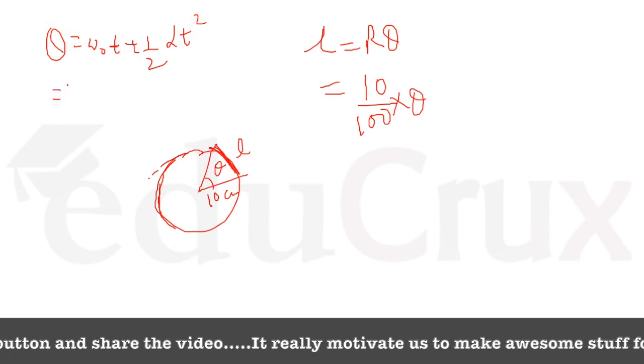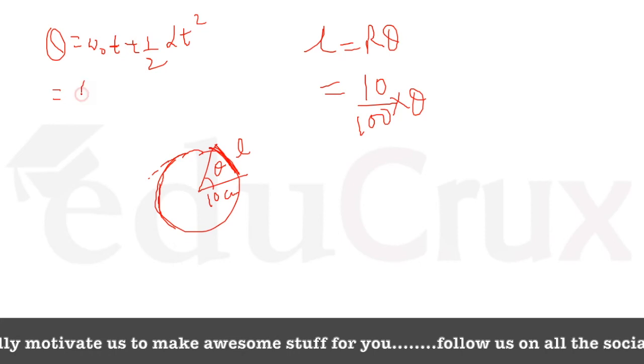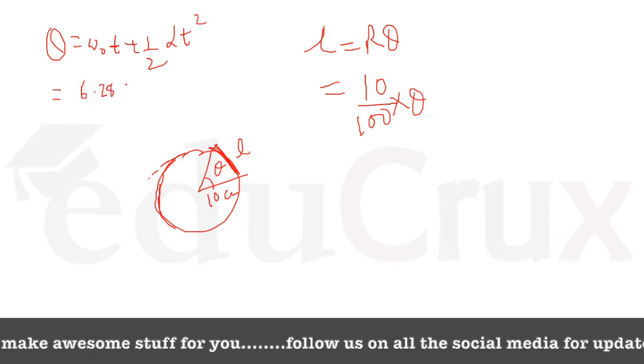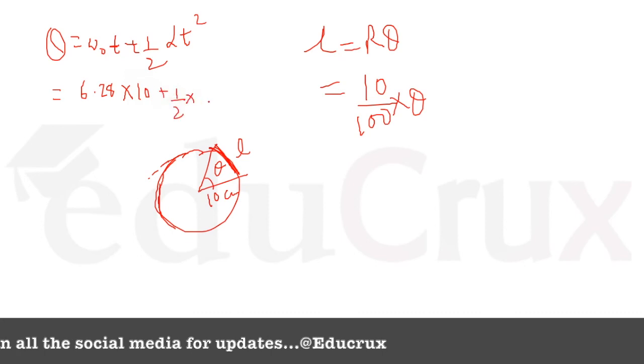So omega naught, we know it's 6.28 radians per second. So this is 6.28 into time. For 10 seconds, half into alpha, we calculated as 0.314 into 10 squared, which is 100.